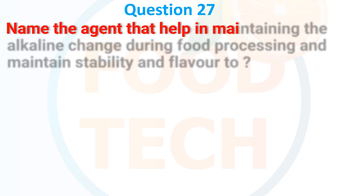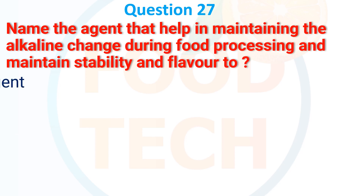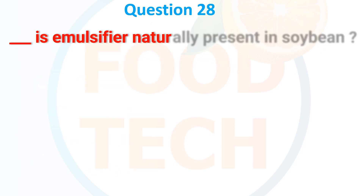Name the agent that helps in maintaining the alkaline balance during food processing and maintaining the stability of flavor. A. Anti-caking anti-foaming agent, B. Anti-caking agent, C. Sequestrant, D. Buffering agent. The answer is D. Buffering agent.